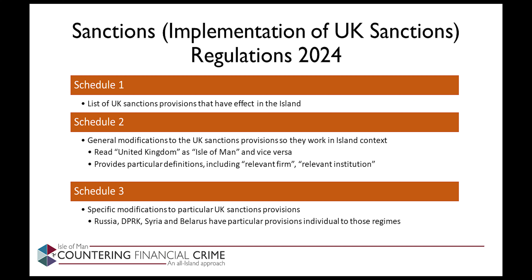I'll take you through a few examples. Where a UK sanctions provision refers to the United Kingdom, you should read this as being the Isle of Man and vice versa. This may apply, for example, where there is a movement of goods into or out of the country. Certain definitions contained in the UK sanctions provisions need to be modified, including the definitions of a relevant firm and a relevant institution, so that they refer to Isle of Man legislation, and the definition of imports and exports, so that it makes clear these are imports and exports relating to the Isle of Man, not to the United Kingdom. Other definitions have to be replaced, such as the definition of a United Kingdom person — replaced by the definition of an island person — and the definition of a UK credit or financial institution, replaced by the definition of an Isle of Man credit or financial institution.